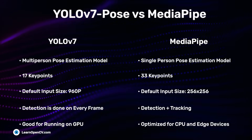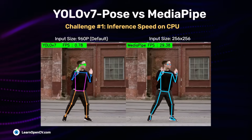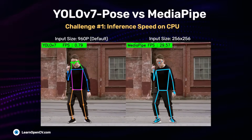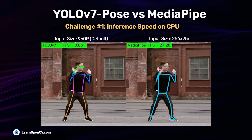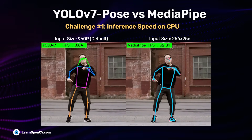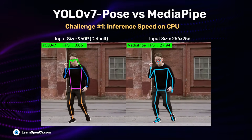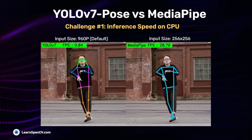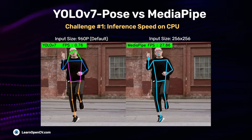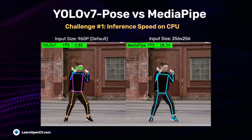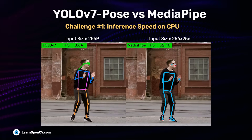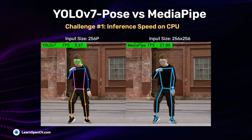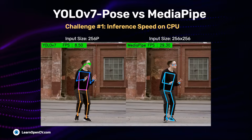First, let's see results out of the box with default values. We can see a drastic difference in FPS between MediaPipe and YOLO, because MediaPipe's input size is 256×256 while YOLO's is 960p. This comparison is somewhat unfair, so in the next run we change YOLO's input size to 256p. This gives an 8x FPS boost to YOLO, but it still lags behind MediaPipe.